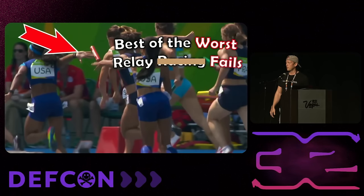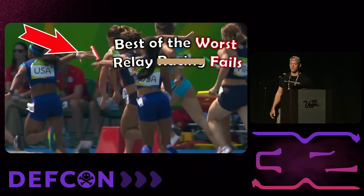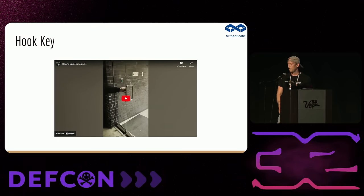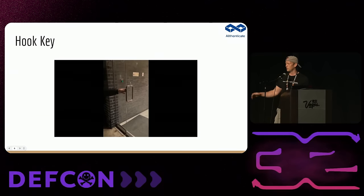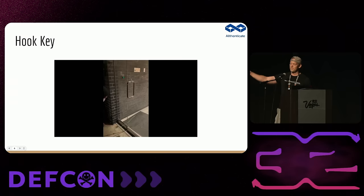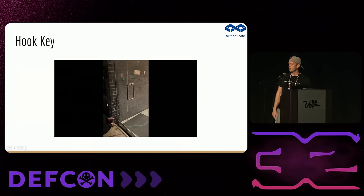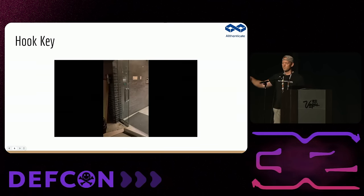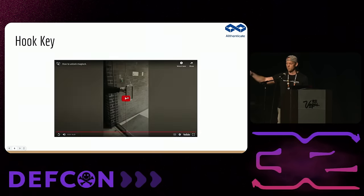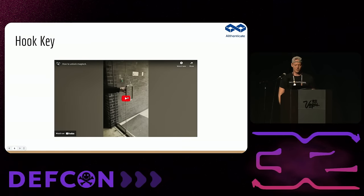Let's look at some of the worst relay fails. You can trip these relays in not very sophisticated ways. In one video, the exit button is on the left — you get a sturdy piece of metal, shove it through the door, and click that relay. Bang, you're in. This is probably the least advanced way to trip one of those relays.